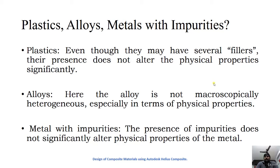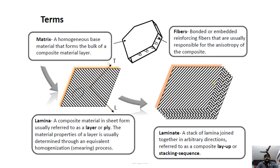In a composite material, the two combined materials remain distinguishable from each other. Metal with impurities is the same case. That is why we do not call plastics, alloys, or metals with impurities composite materials — we have created a separate class known as composite materials.